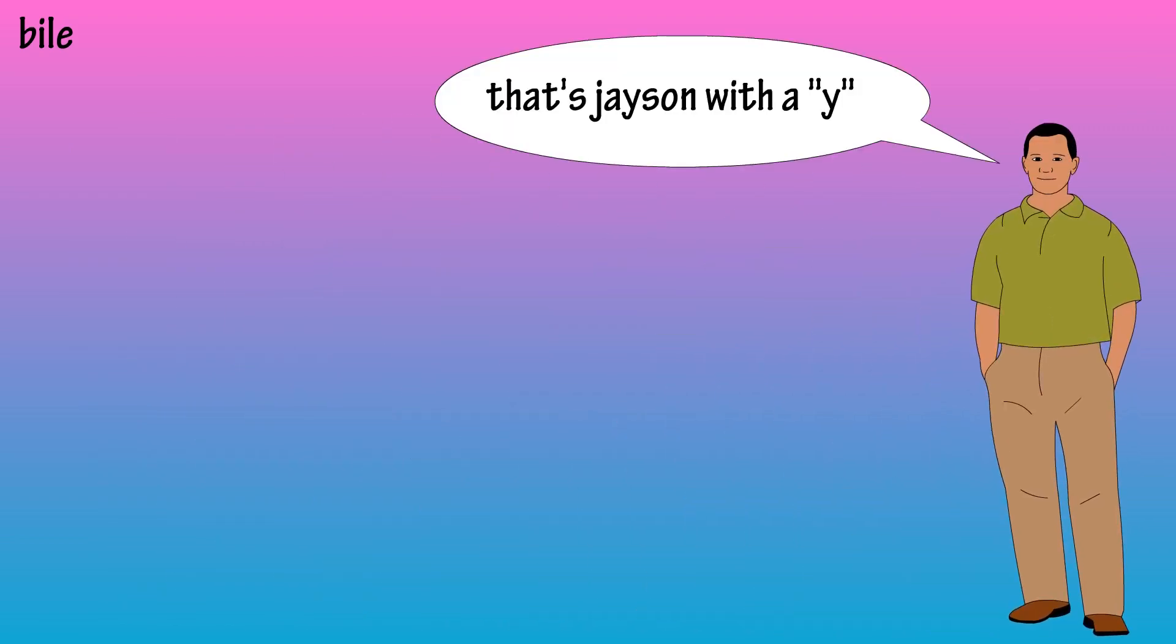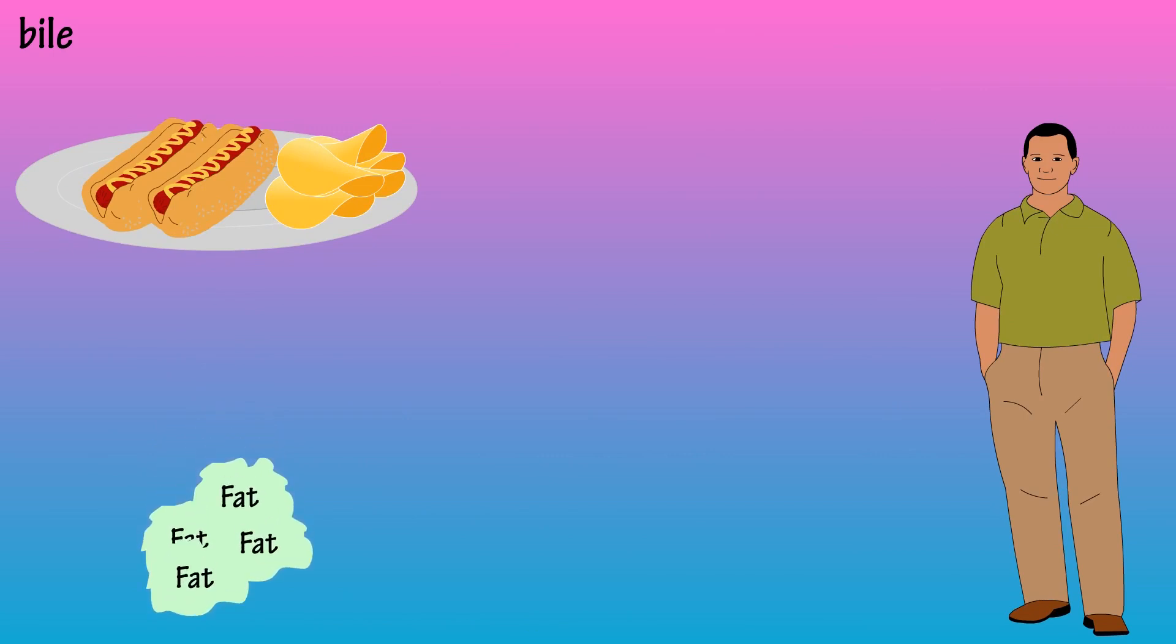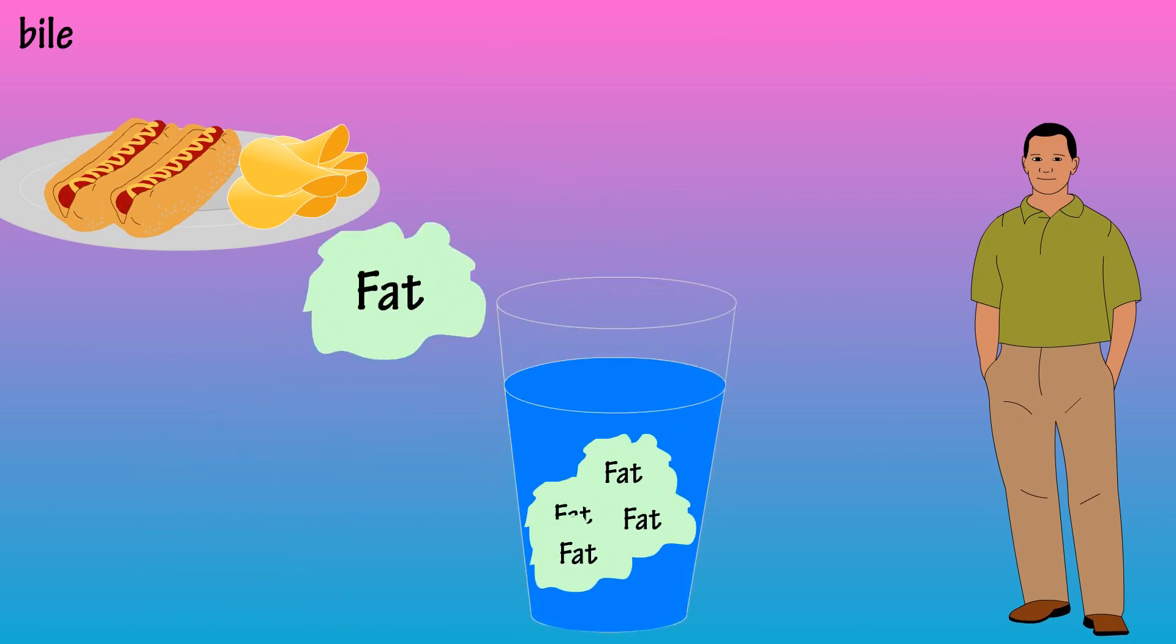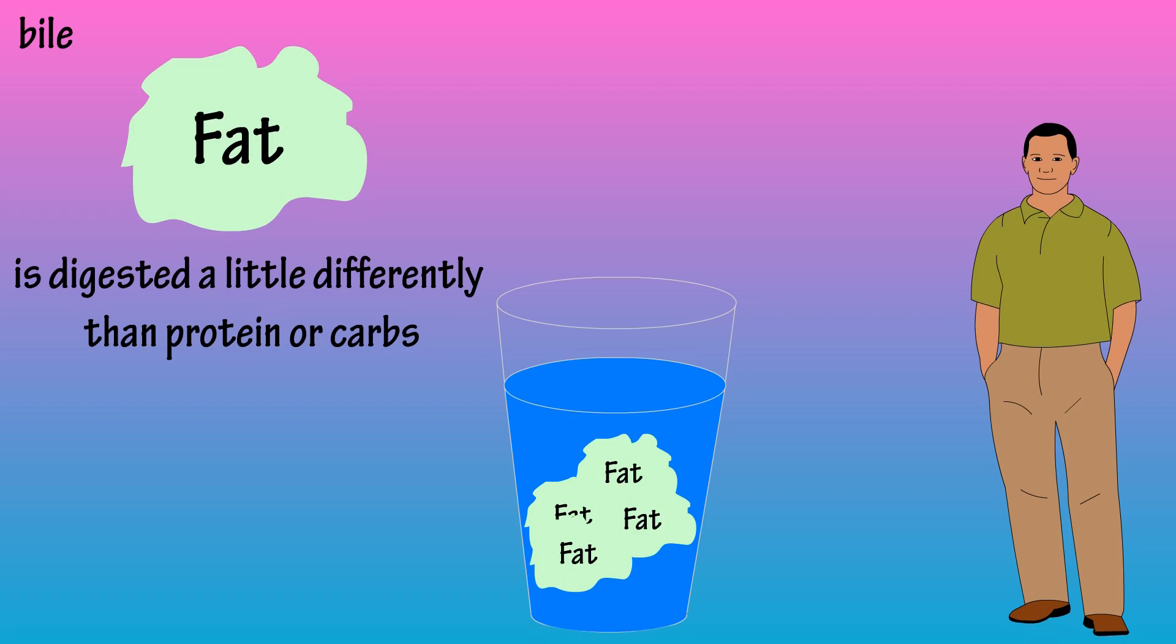Here we have Jason and he has just eaten a meal and part of that meal contains some fat. Fat does not dissolve in water, so this means his body has to digest it in a different way than it would protein or carbohydrates.